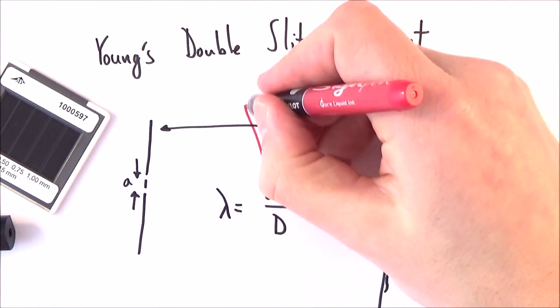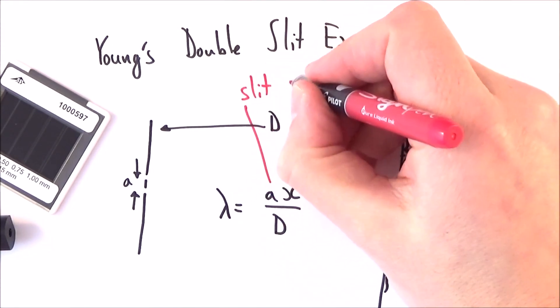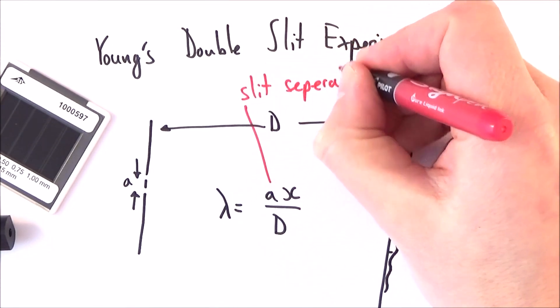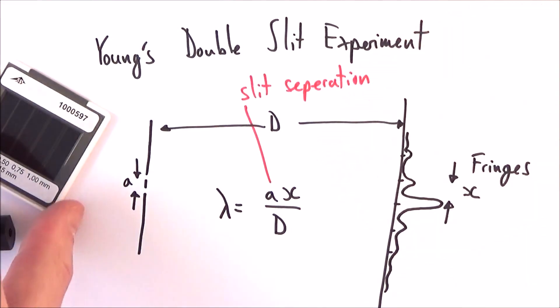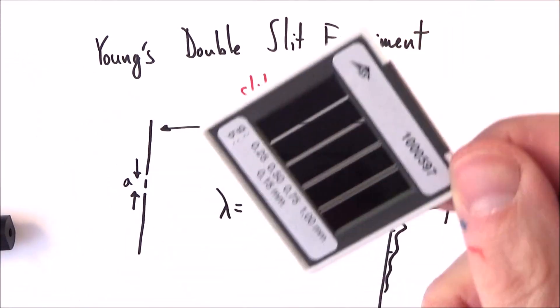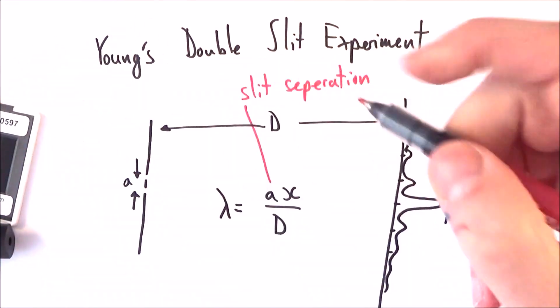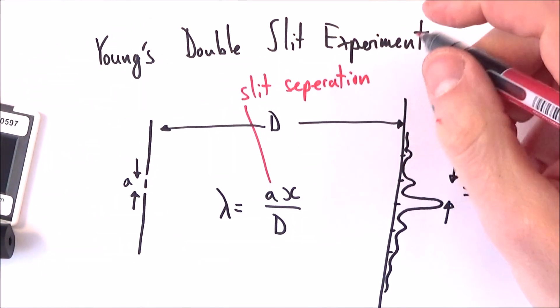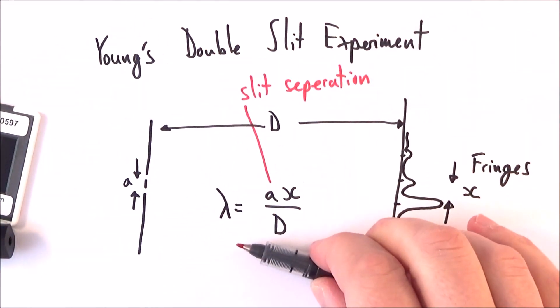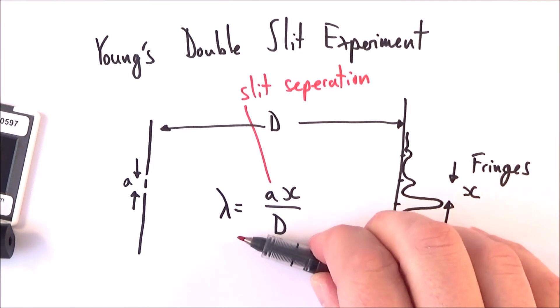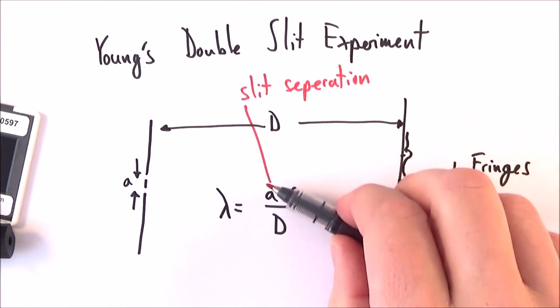So in a bit more detail, a is the slit separation, the distance between the slits. Now often there'll be some information printed on the thing that you're using, but you can measure it using a traveling microscope. This is a microscope that moves along a very small distance where you can very accurately read the distance or the length of very small objects.